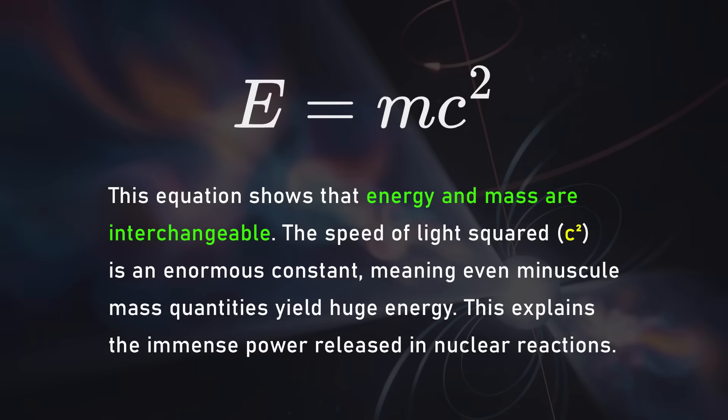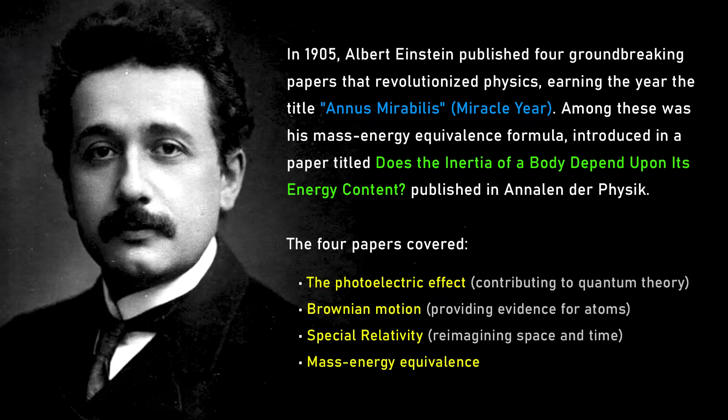Zooming out to the biggest possible picture — across hundreds of millions or billions of years, advanced alien civilizations out there are likely going to be powered by fusion. Our advanced civilization is already powered by fusion in the sense that the sun is our power plant. The other thing worth dwelling on is the physics — E=mc².